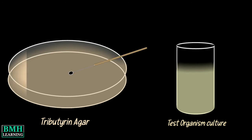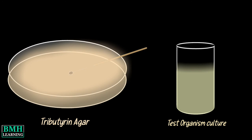When the plate is inoculated with a lipase-positive organism, clear zones will appear around the growth as evidence of lipase activity. If no clear zones appear, the organism is lipase-negative.